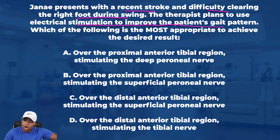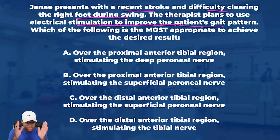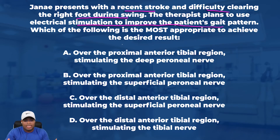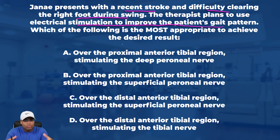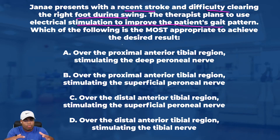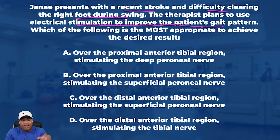I love answer A because I know the deep peroneal nerve innervates the anterior tib — write that down. Deep peroneal nerve innervates anterior tib. I also like it because it says over the proximal anterior tibial region. Have you ever seen a Bioness unit? It's a functional electrical stim cuff we use for patients with foot drop, and that cuff goes around in that proximal anterior tibial region. That's exactly where I'd want to stimulate that nerve in order to contract the anterior tib.